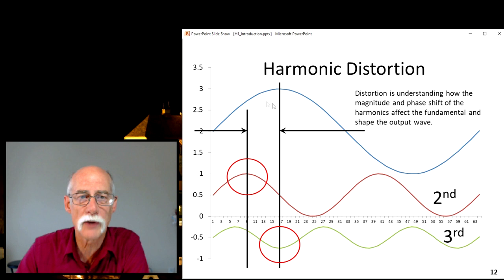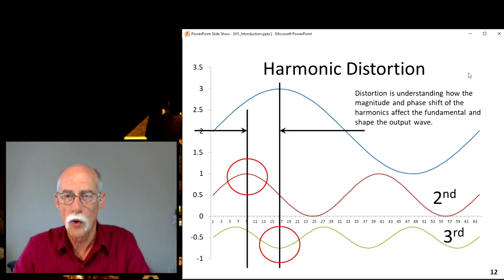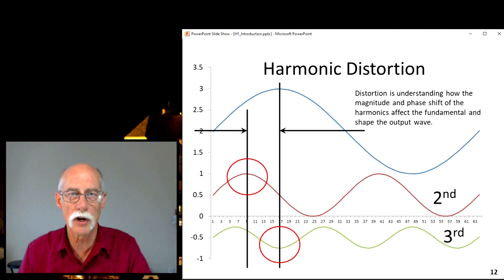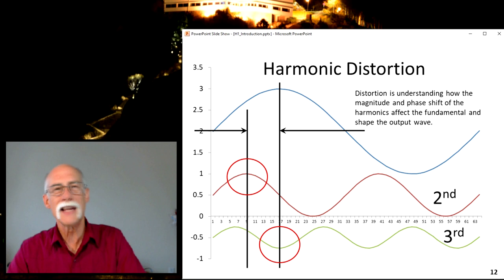The third harmonic, when you add it to the fundamental frequency, affects the resultant by dragging down the peak. Or over here, it pushes up the peak. So the second harmonic is going to change the asymmetry of the signal, and the third harmonic is going to flatten out the peaks. In a nutshell, that's the problem with the second and third harmonic.